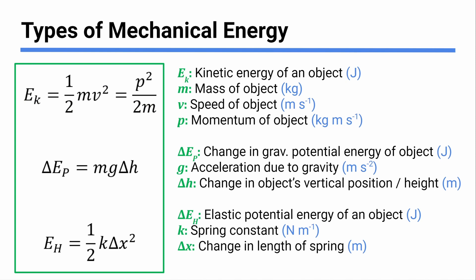Here are your data booklet equations for energy. We have equations for kinetic energy, gravitational potential energy, and elastic potential energy. For kinetic energy: Ek equals one half times m times v squared, where m is the mass and v is the speed of the thing. They also give you kinetic energy in terms of momentum: p squared over two times m. This is useful if you know momentum but not speed — since p equals mv, these are two versions of the same thing.